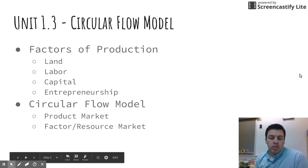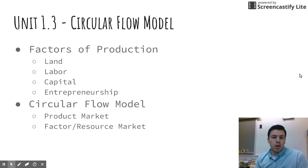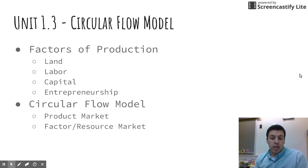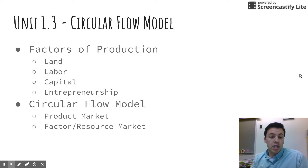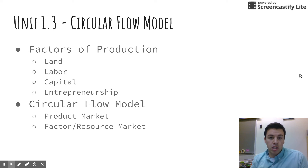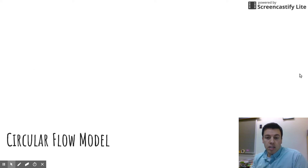Hey econ students, we have a video here on the circular flow model — should be a fairly quick one. There are two big concepts here: the factors of production — land, labor, capital, and entrepreneurship — and the circular flow model itself, which is really just showing the connection between individuals and businesses through various markets. Let's dive into this.